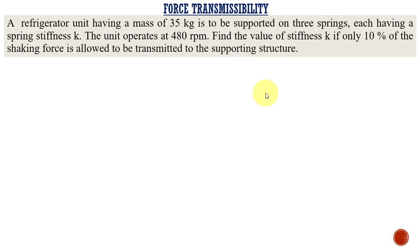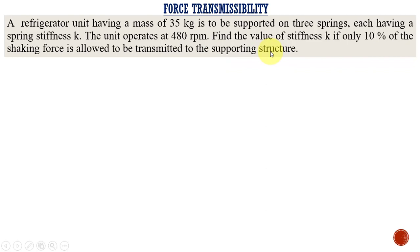Welcome to my lecture. Today we are going to solve a tutorial problem in force transmissibility. A refrigerated unit having a mass of 35 kg is to be supported on three springs, each having a spring stiffness of K. The unit operates at 480 rpm. Find the value of stiffness K if only 10% of the shaking force is allowed to be transmitted to the supporting structure.